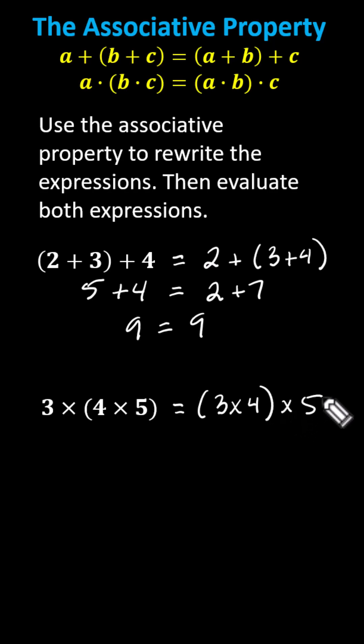And now we evaluate both expressions. Going back to the left inside the parentheses we have 4 times 5 which is 20. The left side simplifies to 3 times 20.